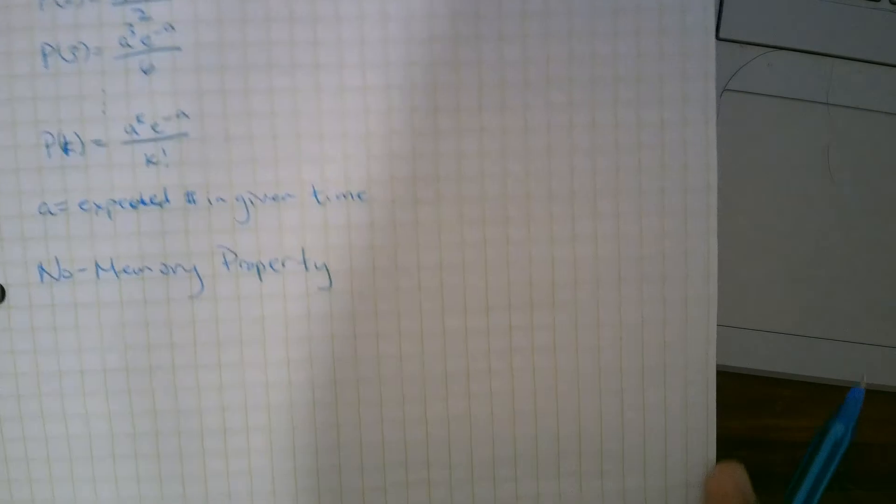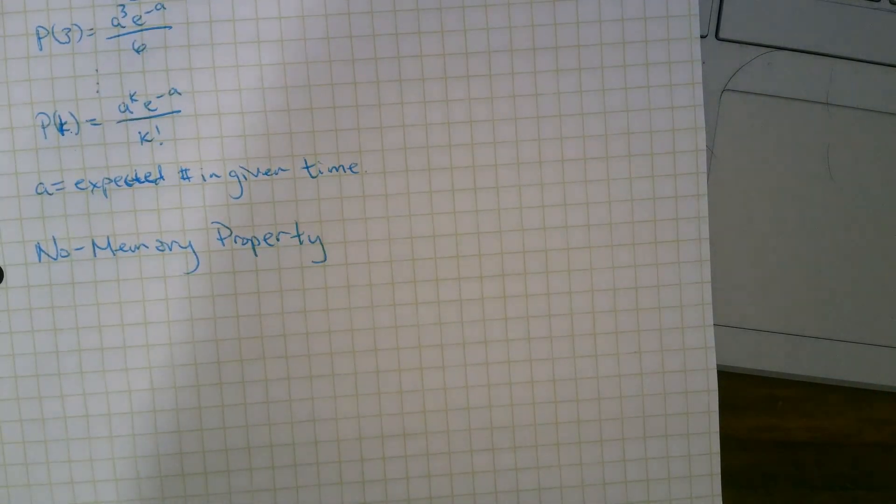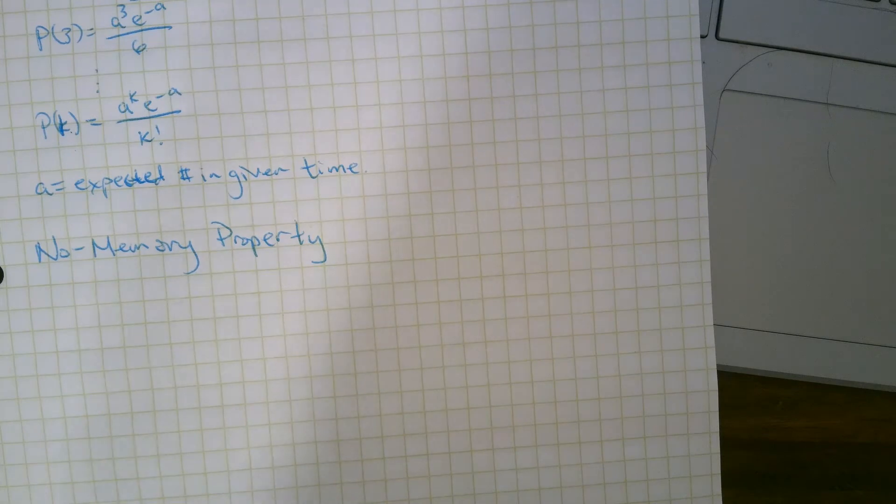All right, so this kind of distribution gives us a no memory property. What does that mean? That means that any time we can reset, and it's as if we're at the beginning. So let's say your store is open 24 hours, and you expect 50 customers in 8 hours. It doesn't matter if you had a very busy previous 8 hours.